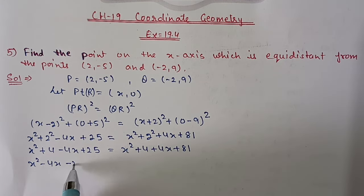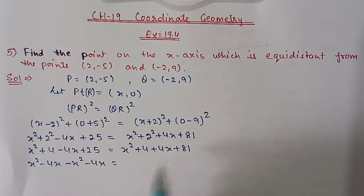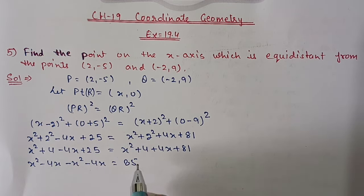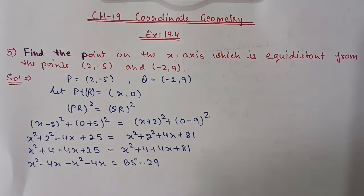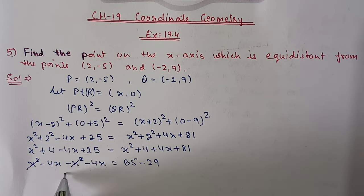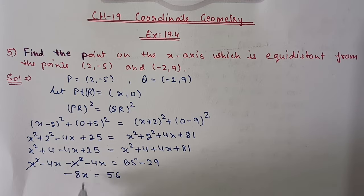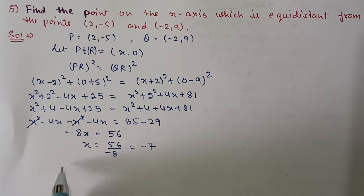Shifting variables to one side: x² cancels out, -4x - 4x = -8x. Numbers: 4 + 25 = 29 shifts to give -29, and 4 + 81 = 85. So -8x = 85 - 29 = 56, giving x = 56 / (-8) = -7. Therefore point R is (-7, 0).